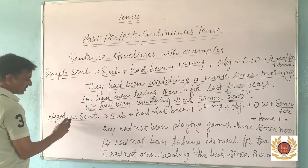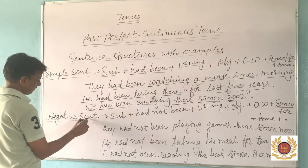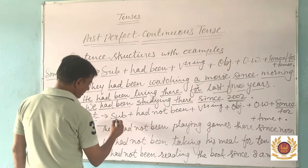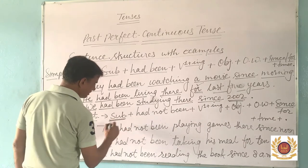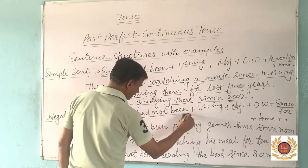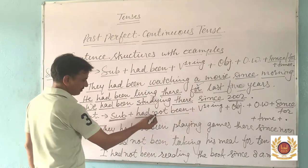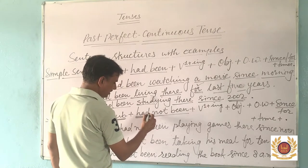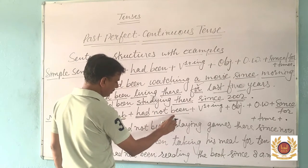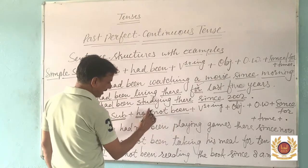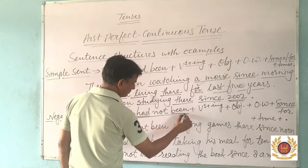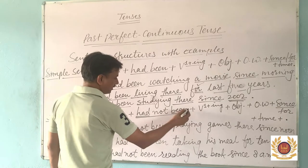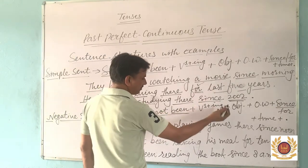Now we take the next sentence structure — the negative sentence. In a negative sentence in Past Perfect Continuous Tense, we follow this structure: first, the subject; then 'had not been', because in a negative sentence we use 'not' after 'had'. So 'not' is set between 'had' and 'been'. In a negative sentence we will use 'had not been'. The remaining structure will be the same as the simple sentence.